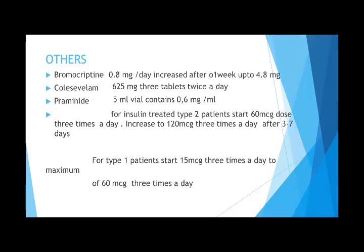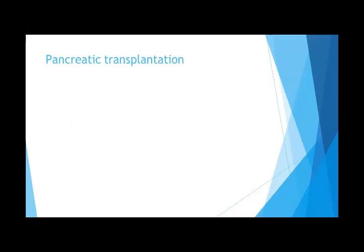Certain other groups are also used in type 2 diabetes but are not commonly used. These include bromocriptine, starting at 0.8 mg per day and increasing up to 4.8 mg, and pramlintide in 5 mL vials at 6 mg/mL. These medicines are not available in Pakistan, so they are mentioned only from a theoretical perspective. Pancreatic transplantation has been tried experimentally but with no success so far; islet cell transplantation is another option.